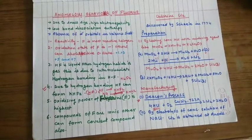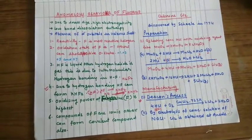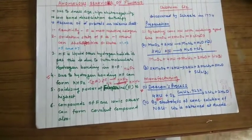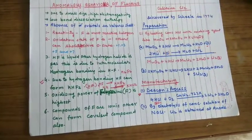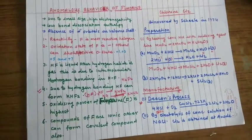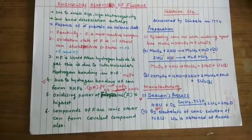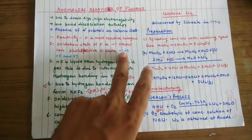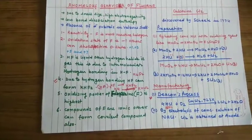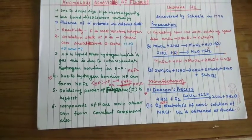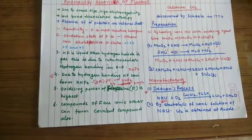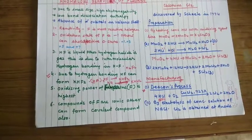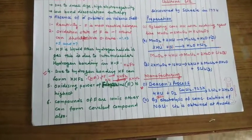You have studied properties and seen that fluorine shows certain abnormal behavior, shows certain properties that are different from other members of the group. These properties are called anomalous behavior. The reason for anomalous behavior is same as other cases you have seen. It is due to smaller size, high electronegativity and low bond dissociation enthalpy and due to absence of d orbital in the valence shell.